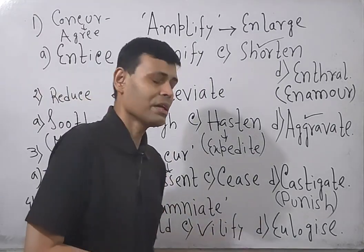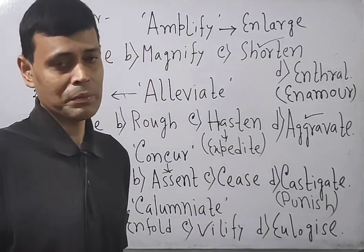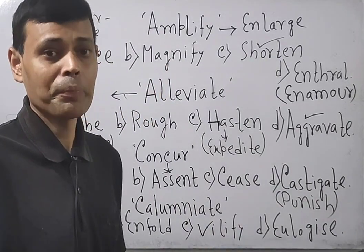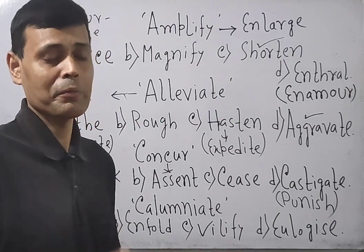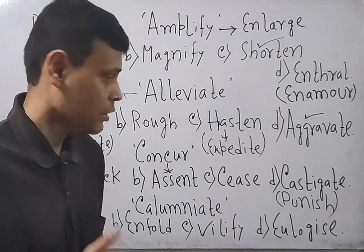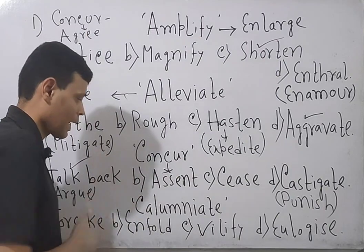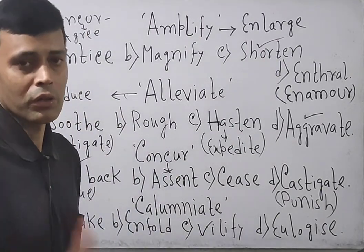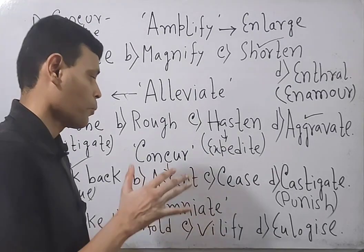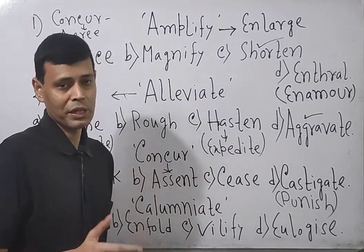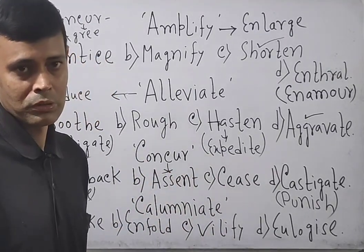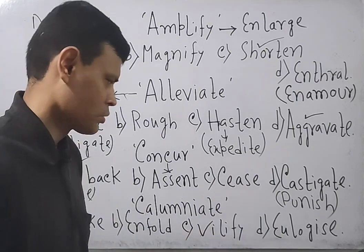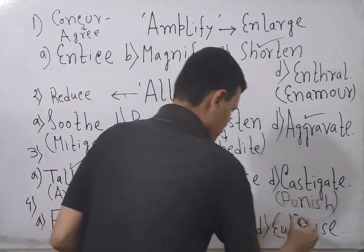Now eulogize is a very interesting word. Eulogize means praise someone or admire someone greatly. So when the meaning is calumniate means blame or vilify or malign, the opposite should be admire or eulogize or praise. Even you can say panegyrics. So the exact opposite is eulogize here.